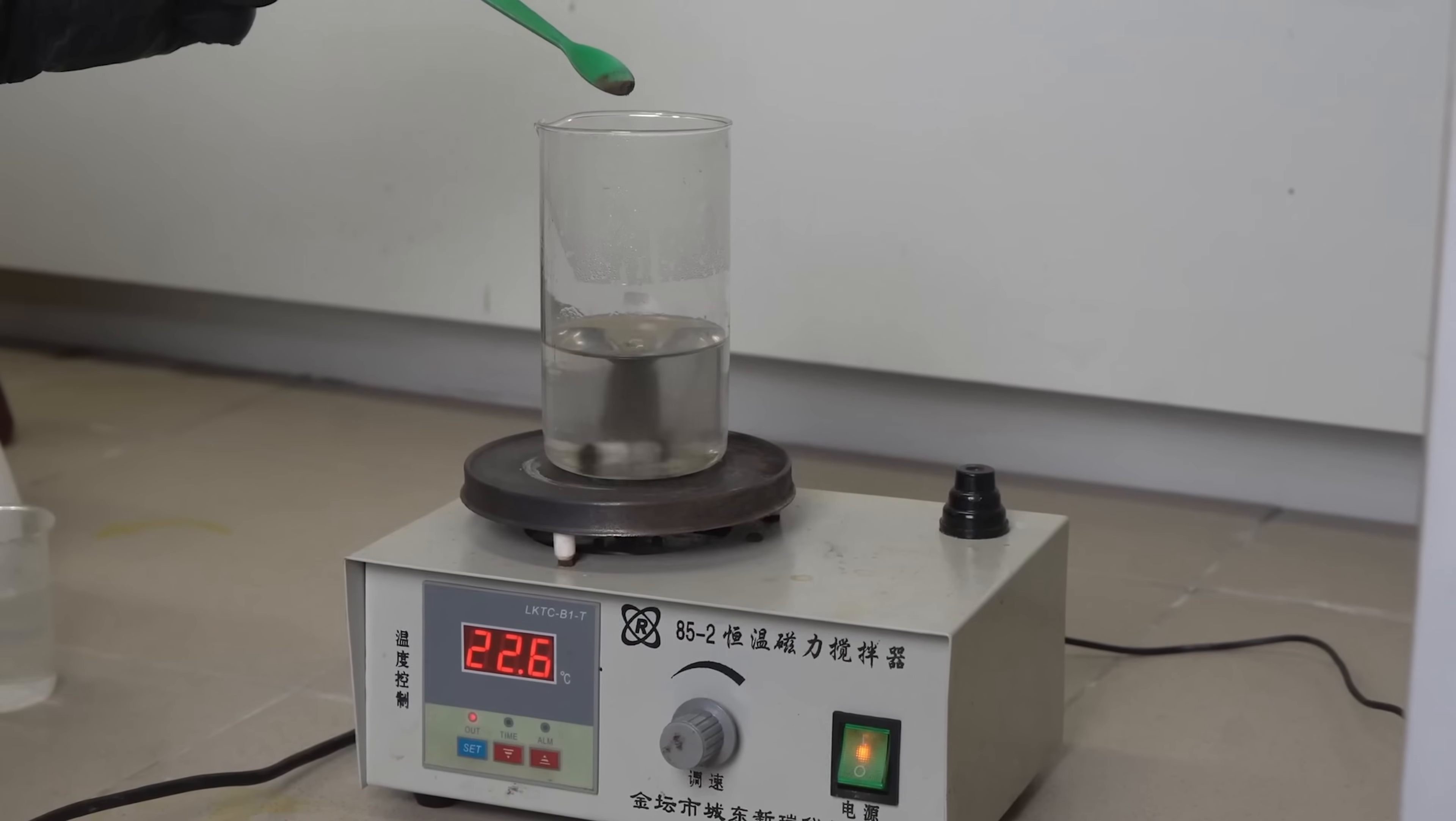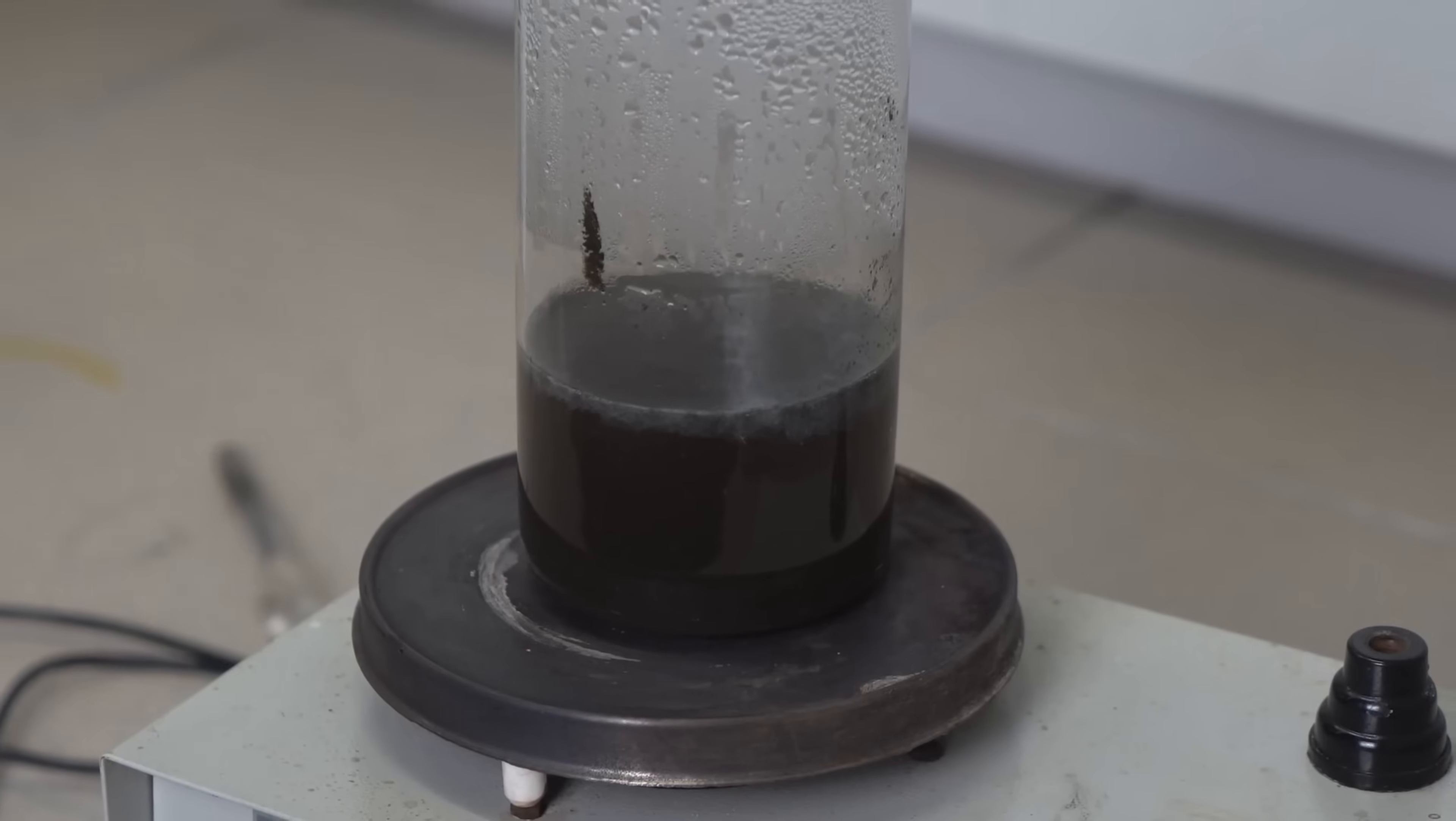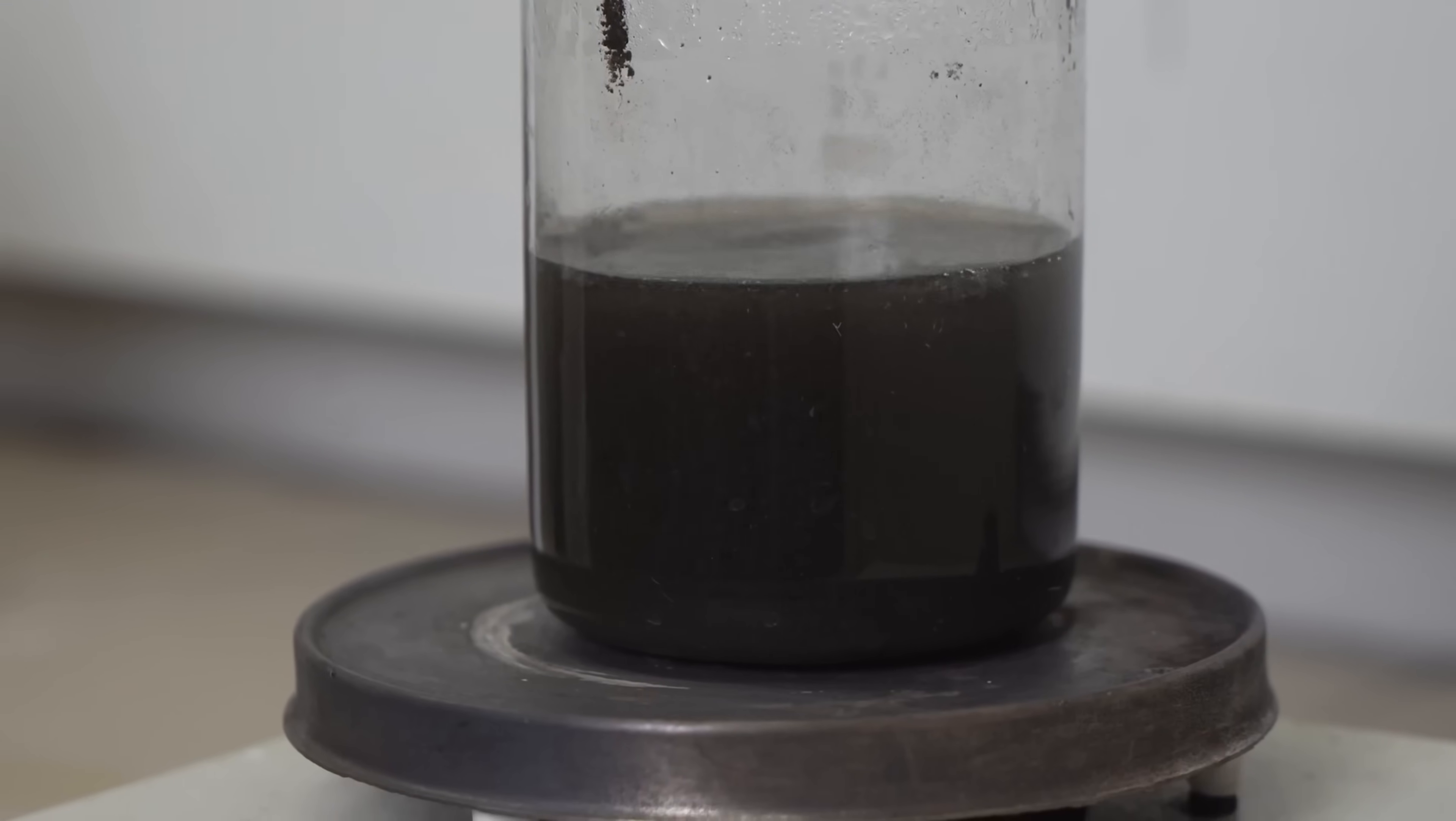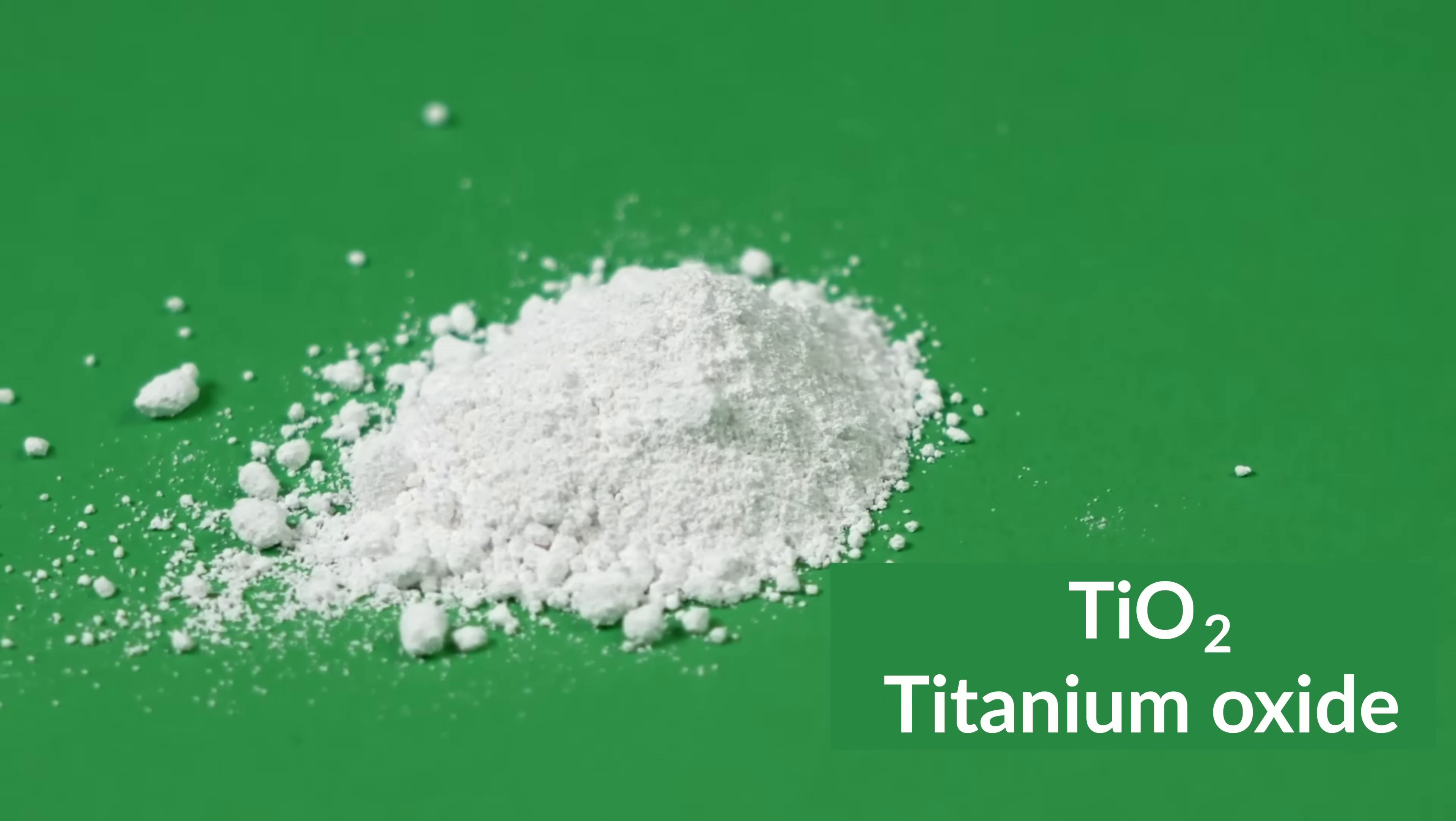For this purpose, the precipitate is added to a 17% solution of sodium hydroxide, or alkali, and heated for half an hour. In this case, silicon dioxide, or fine sand, passes into the solution, leaving a titanium concentrate, which can be purified to obtain snow-white titanium oxide.